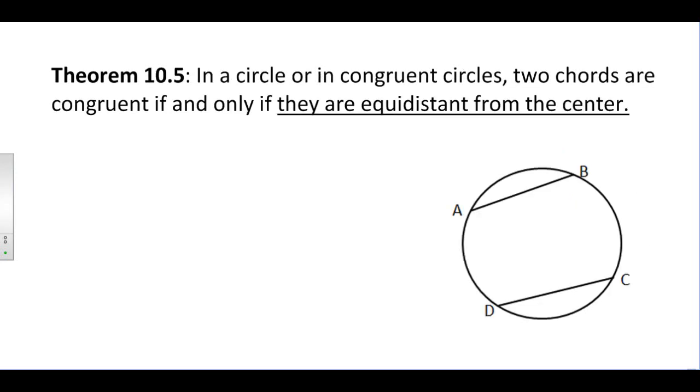Theorem 10-5: in a circle or in congruent circles, two chords are congruent if and only if they are equidistant from the center of the circle. What this means, remember if I have two chords that are congruent, their arcs will be as well, but what this is saying is the only time these chords are going to be congruent to each other is if they are the exact same distance from the center of the circle.